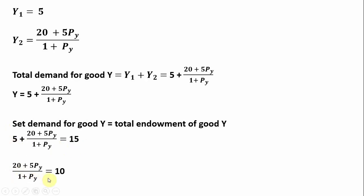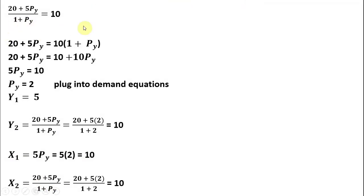Subtracting 5 from both sides, then multiplying both sides by (1 plus the price of good y), simplifying the right-hand side, subtracting 10 from both sides gives 10, and then subtracting 5 times the price of good y from both sides. Therefore, the price of good y is 10 divided by 5, which equals 2.